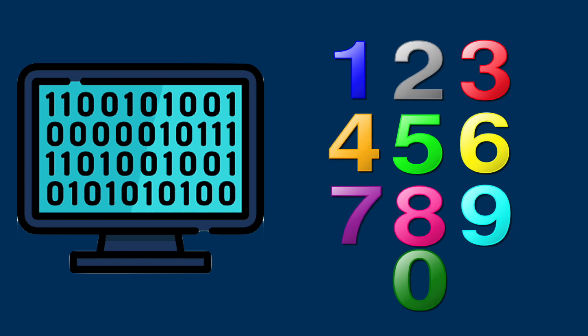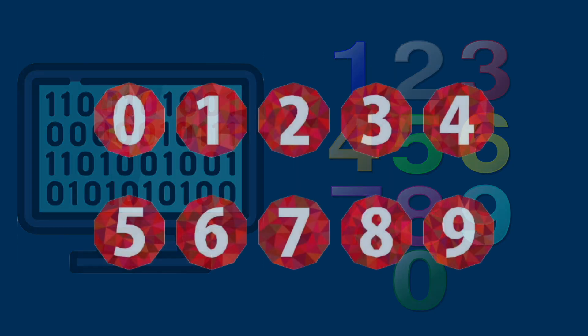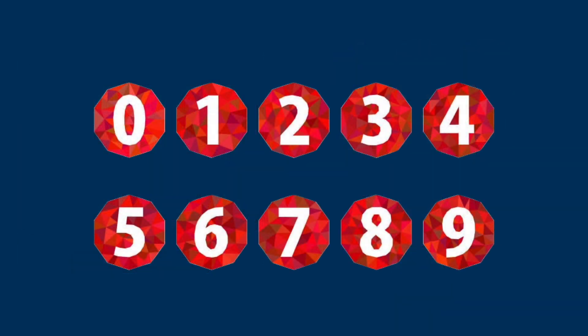For starters, here's the truth about binary: it is a number system like the decimal system we use every day. The major difference between decimal and binary is that decimal has ten possible values for a digit, but binary has only two.